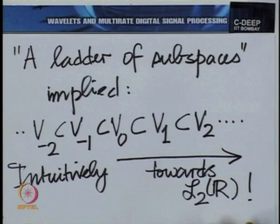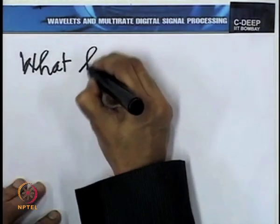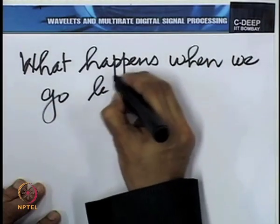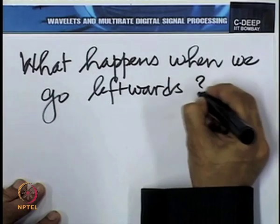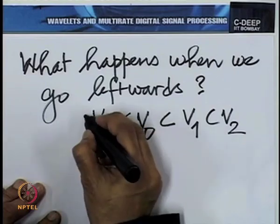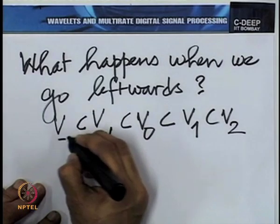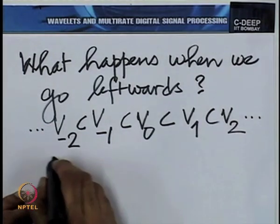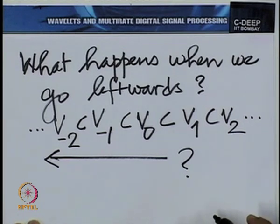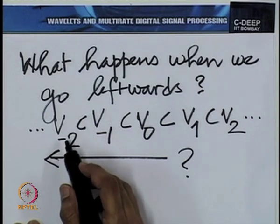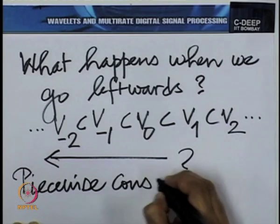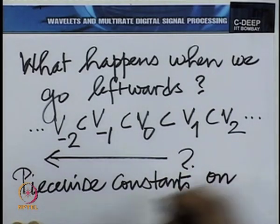What happens when we go leftwards? We have V₀ ⊂ V₁ ⊂ V₂, and V₋₁ ⊂ V₀ and so on. Moving left means we are taking piecewise constant functions on larger and larger intervals.